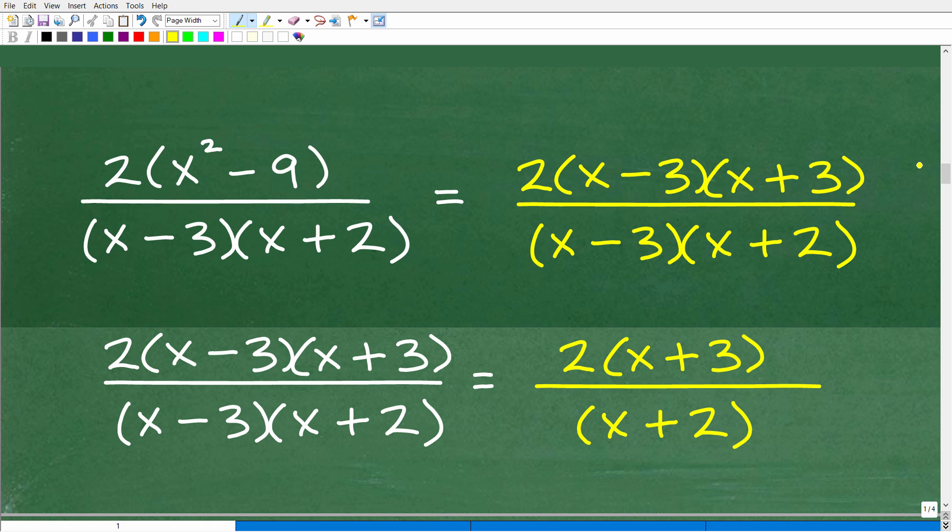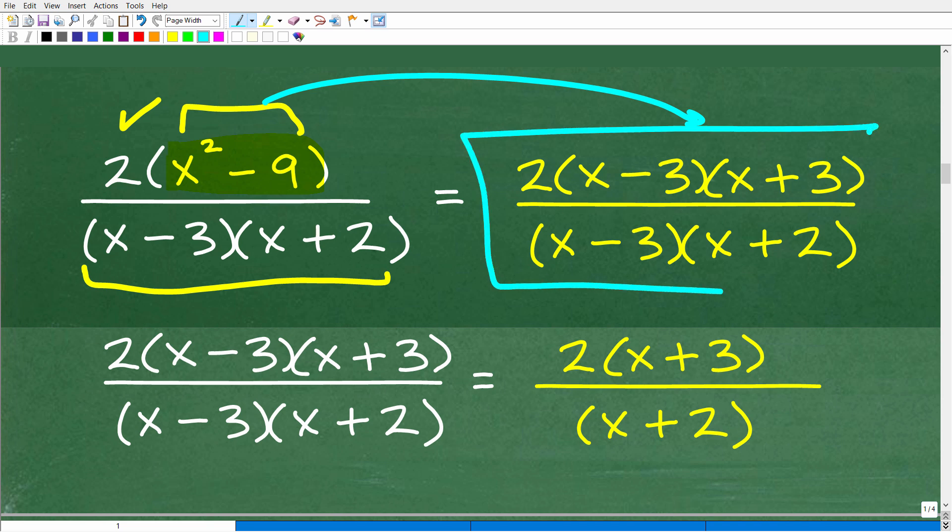Let's get into the rest of this problem now. Here we already factored out that GCF of 2 and we have x squared minus 9. We already factored out the denominator. Right here is a situation called the difference of two squares. It's another factoring technique. So x squared minus 9 we can factor as x minus 3 times x plus 3. Now we're going to write that over our denominator, which is x minus 3 times x plus 2. Here is that expression fully factored.